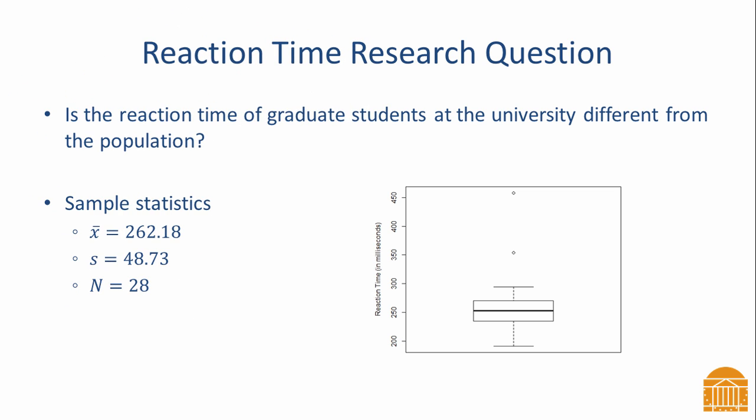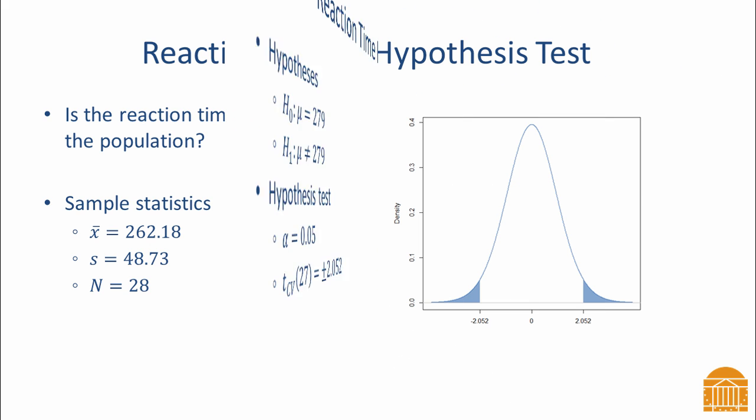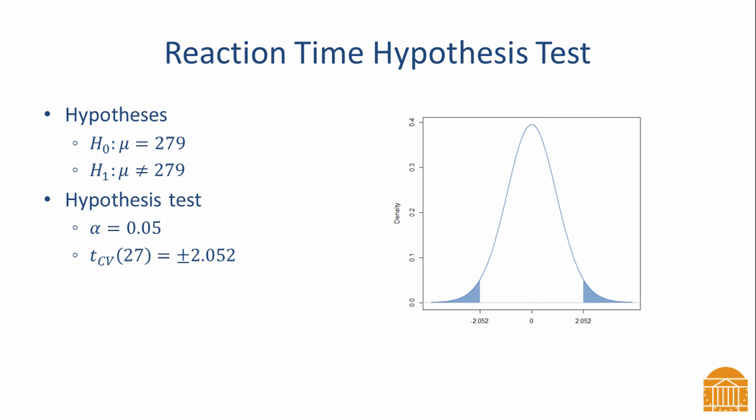Returning to the reaction time example, the sample mean is 262.18 and the sample standard deviation is 48.73. The box plot shows that reaction time is positively skewed with a couple of outliers. For a two-sided hypothesis and a significance level of 0.05, the t-critical value is 2.052.